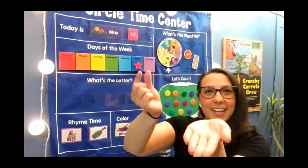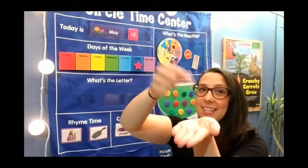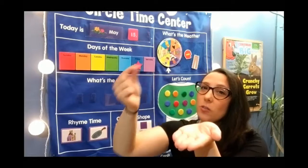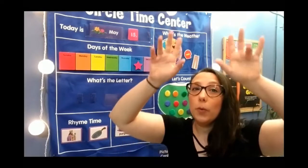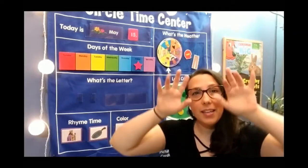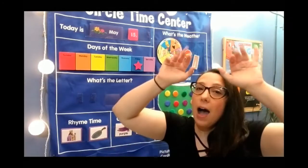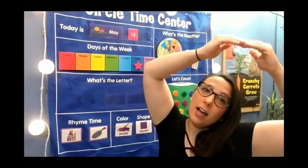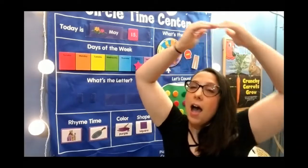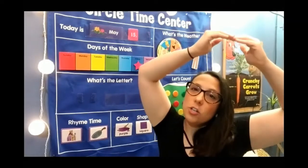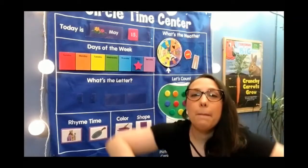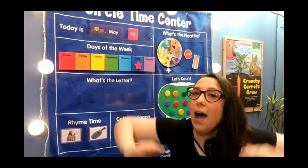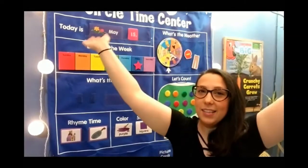Get your soil, get your seeds. The gardener plants the seeds, the gardener plants the seeds. The rain begins to fall, the rain begins to fall. Hi ho, let's watch it grow, the rain begins to fall. The sun begins to shine, the sun begins to shine. Hi ho, let's watch it grow, the sun begins to shine. The plant begins to grow, the plant begins to grow. Hi ho, let's watch it grow, the plant begins to grow.